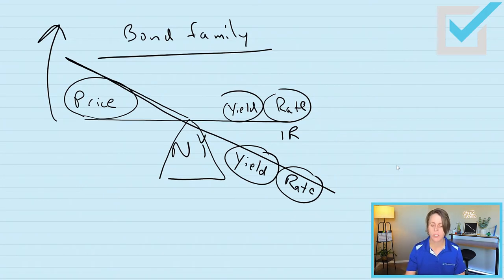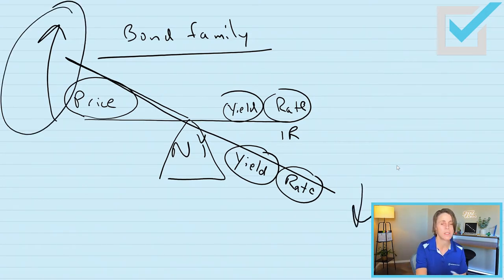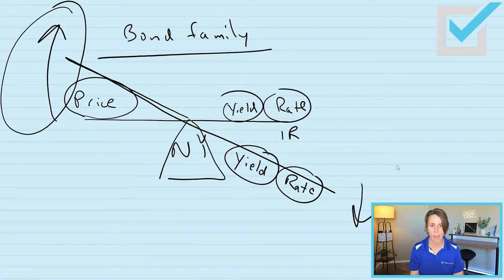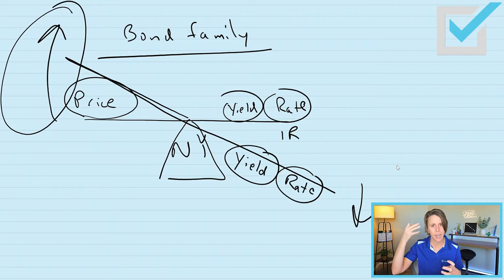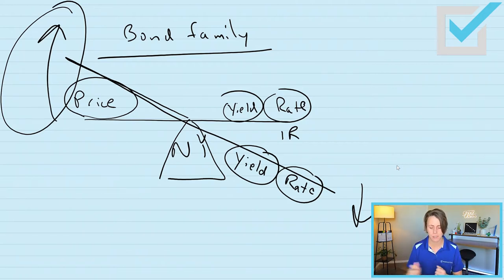Interest rates drive the teeter-totter. So interest rates have gone down, causing the price of this bond in the secondary market to be more than par value. Use the teeter-totter right on your scratch paper — there's something about writing it down that just helps your brain work better. Please use that for your test.